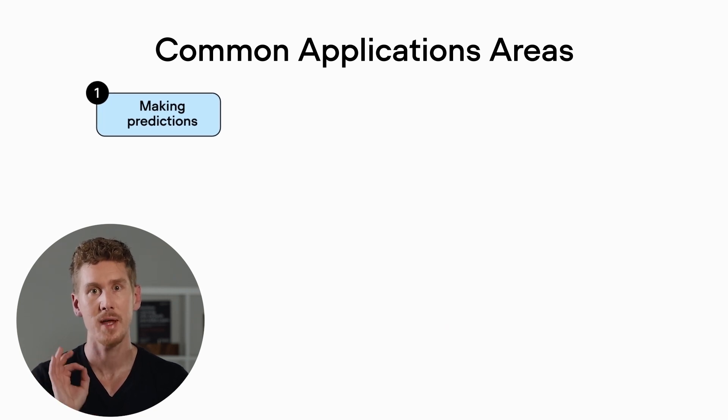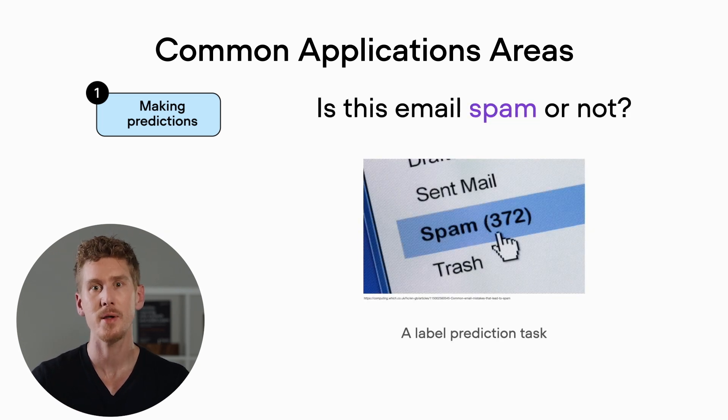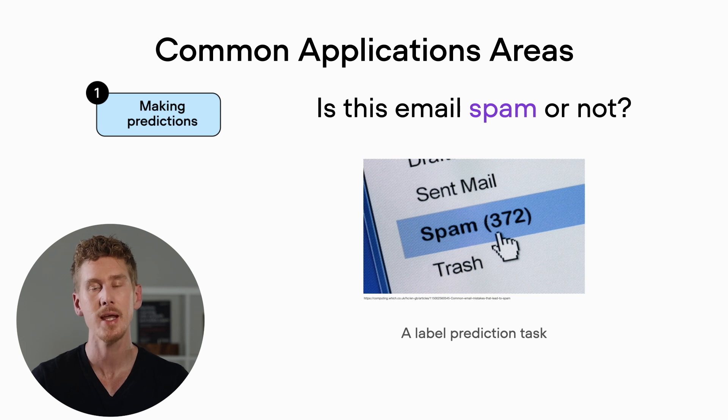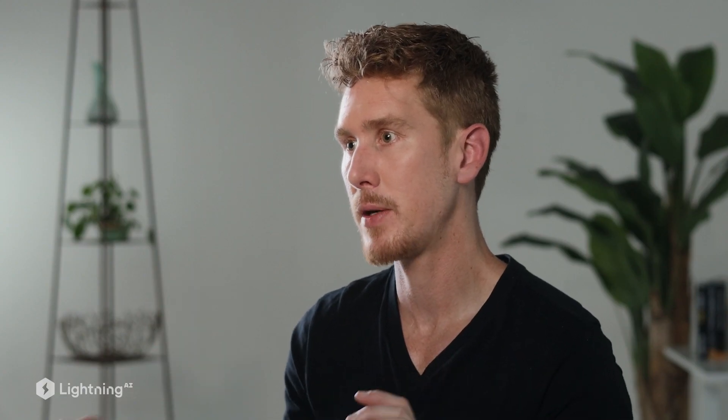A classic application of making predictions with machine learning is spam classification. As we all use email programs, there's something called a spam filter built in, and this spam filter is usually powered by machine learning, and it makes sure that we don't receive too much spam in our inbox. People who develop this spam filter have a large dataset of emails which are labeled as spam and not spam, and then we apply a machine learning classifier to make predictions whether an email is spam or not spam.